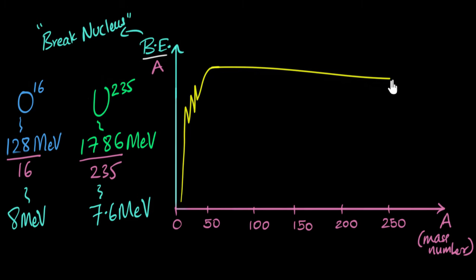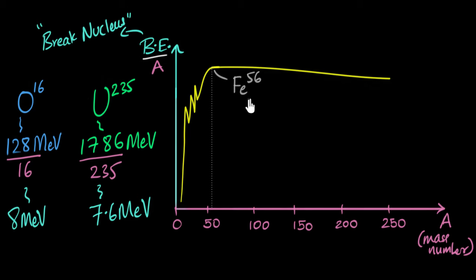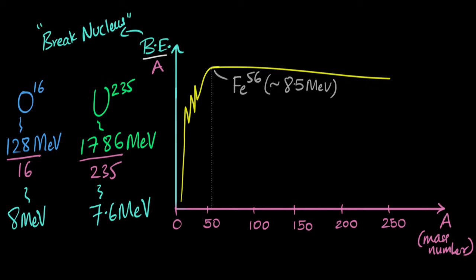Which element has the maximum stability? That element turns out to be iron-56. Iron-56 is the most stable element in the universe because it has the maximum binding energy per nucleon. Its value happens to be close to about 8.5–8.6 mega electron volts. So the most stable element in the universe is iron-56.